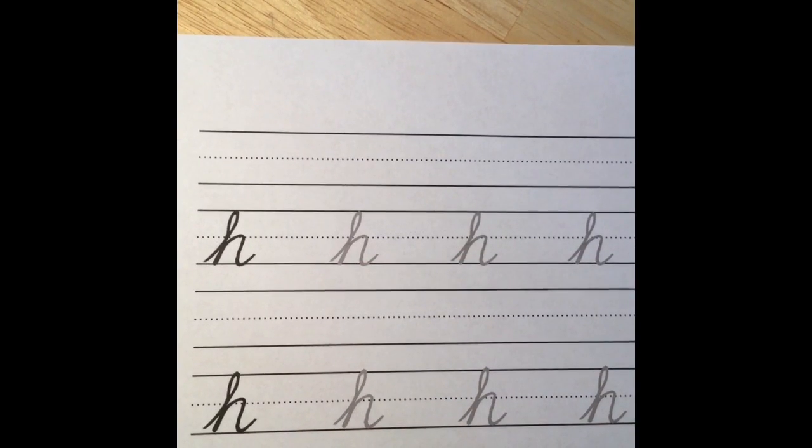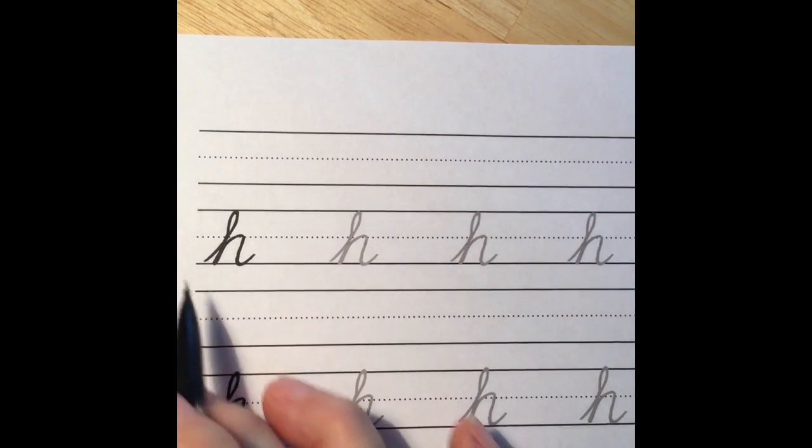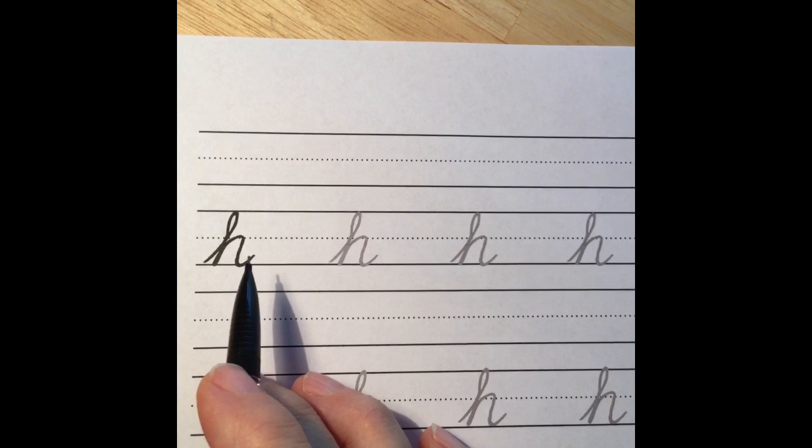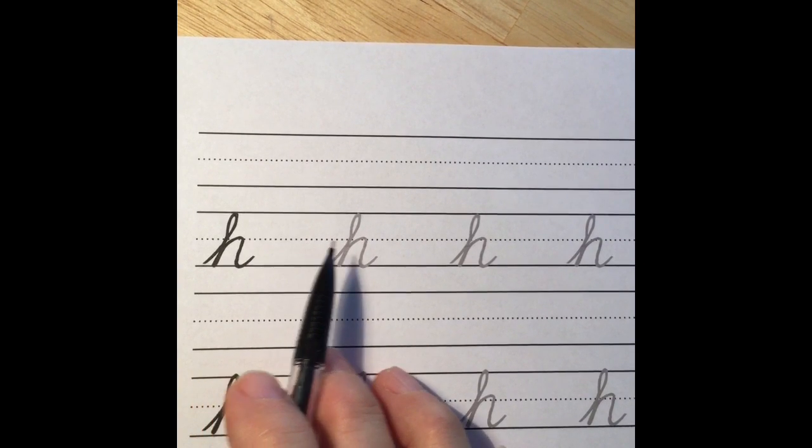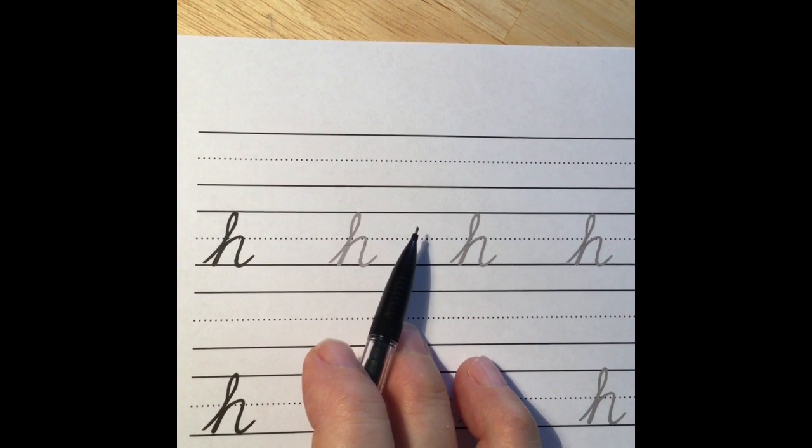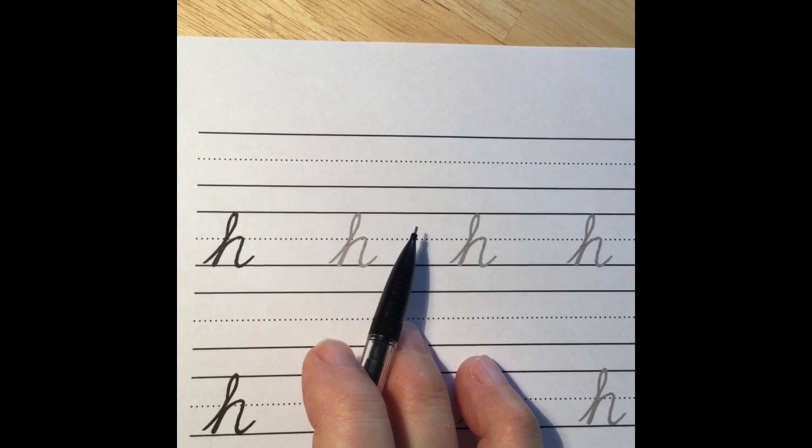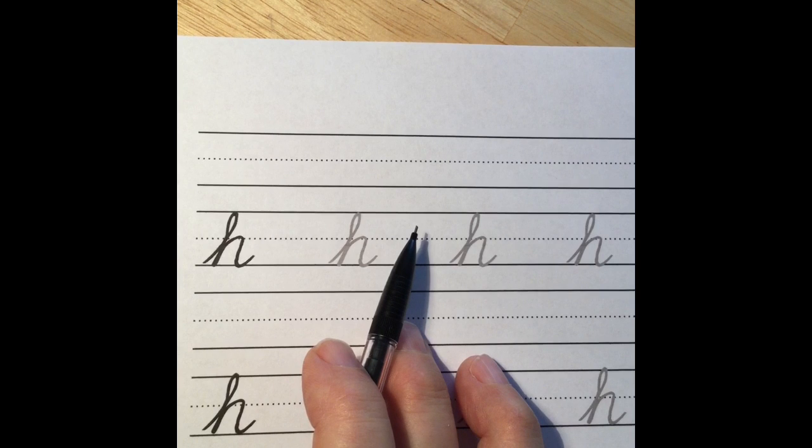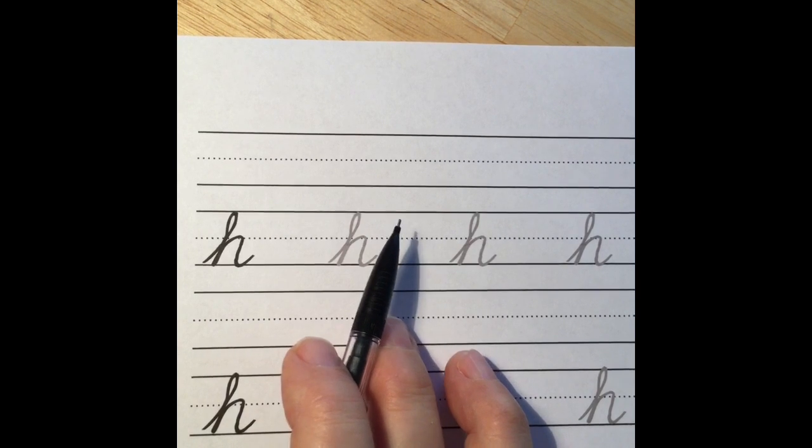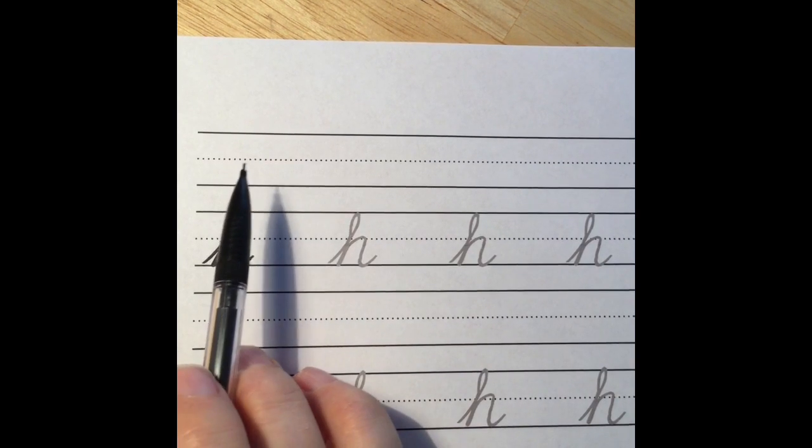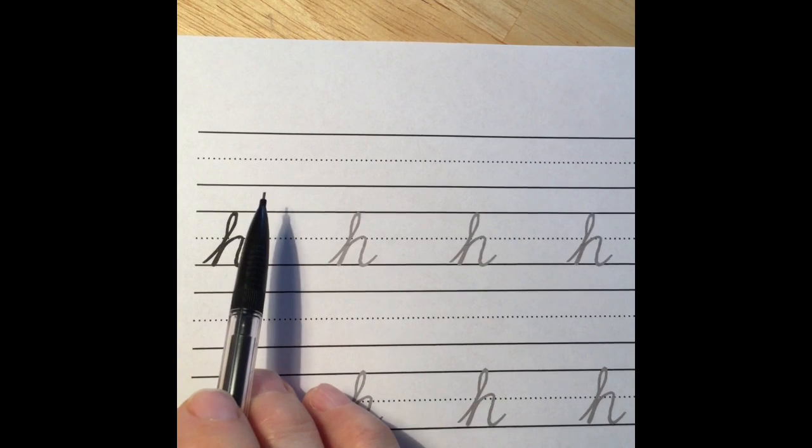As you prepare to do the lowercase h practice page, remember to have your desk nice and cleaned off, just your paper and your pencil. Have your paper turned properly, slanted towards the top of your desk. Make sure you're sitting up straight and that you've written your name neatly on the lines.